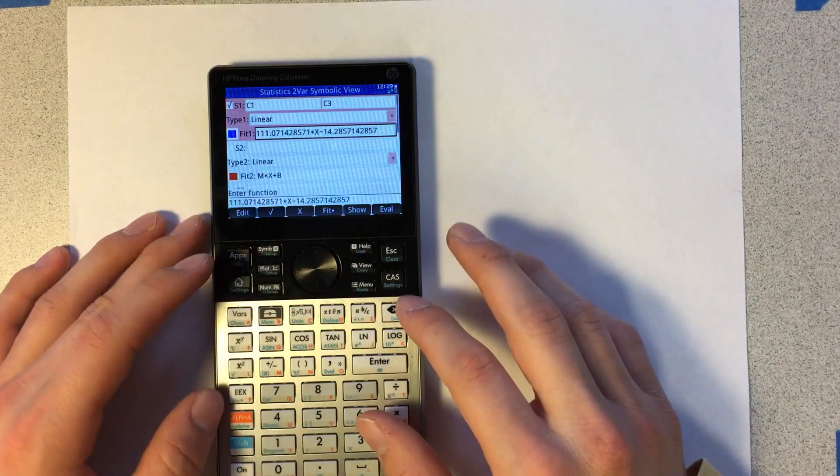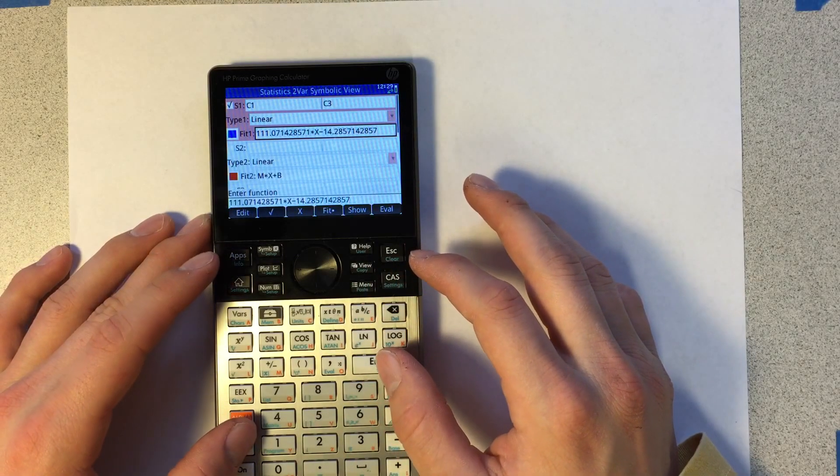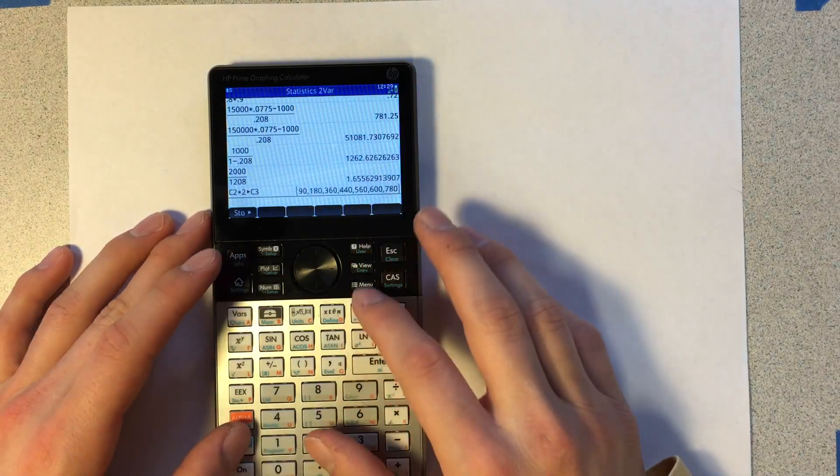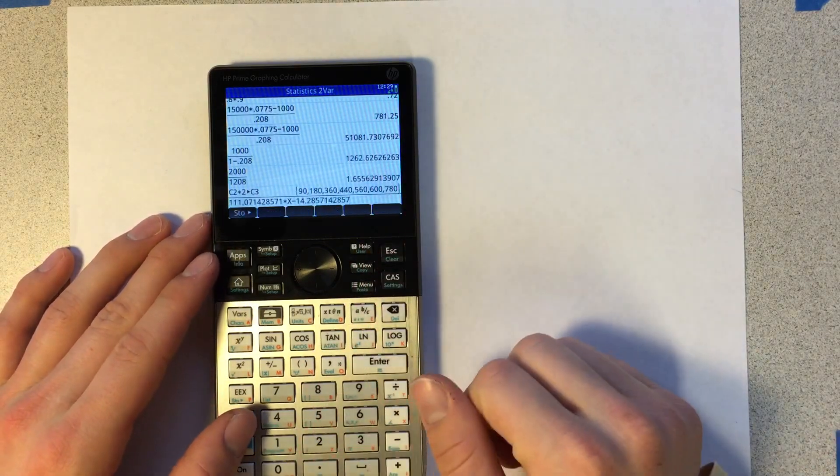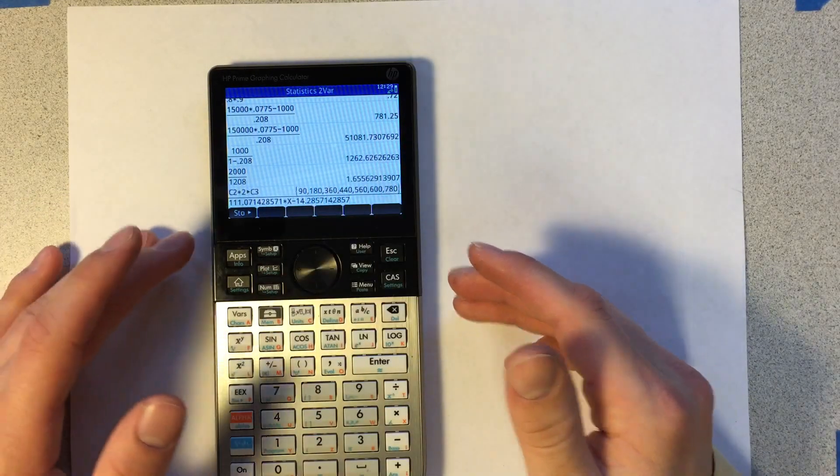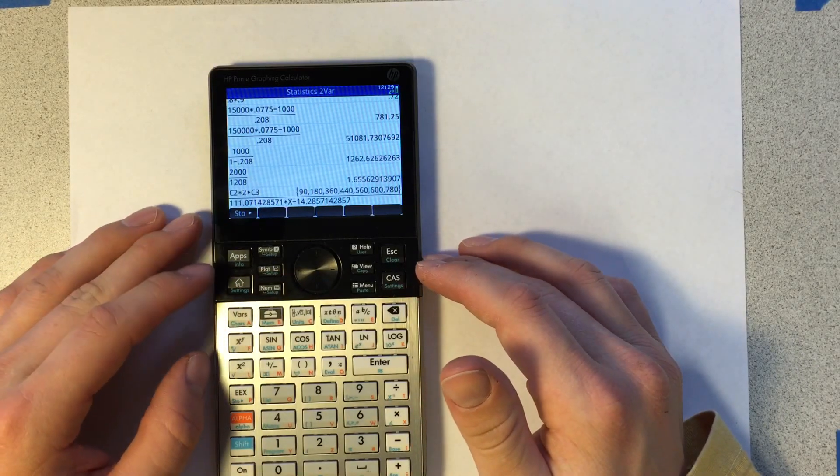There's our expression, we're going to copy this, enter, and enter to get back out of that. And then now we should have, there's our equation right there. And that is if you actually want to visually have the equation in your home or CAS menu, so you can do something with it later.